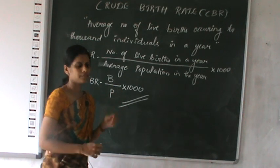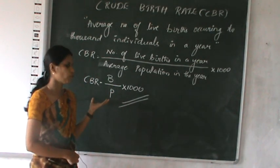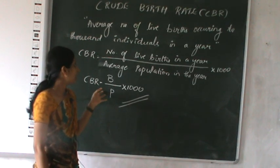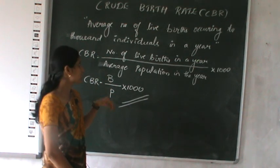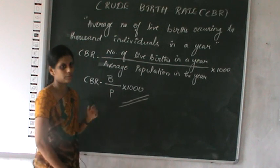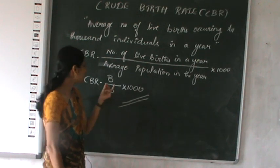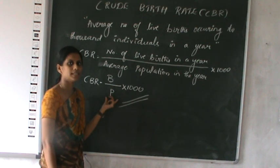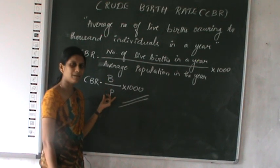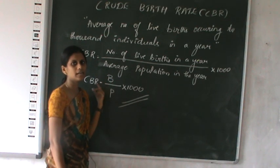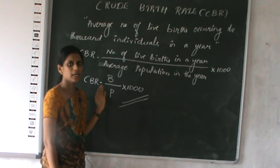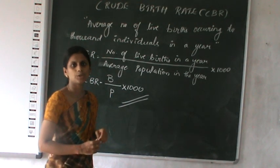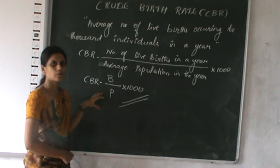What are the merits of crude birth rate? First, it is simple to understand as well as easy to calculate. One more merit is that here we do not need much information for the calculation of CBR — we need only the information related to live births and the information related to population in the same year. Another merit is it indicates the rate of growth of population due to live births.